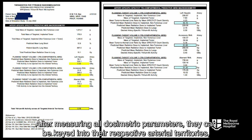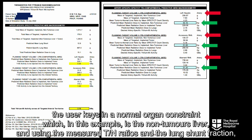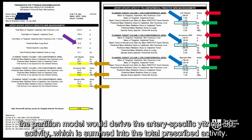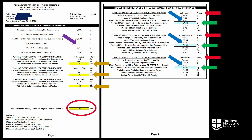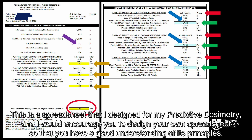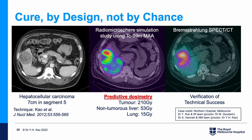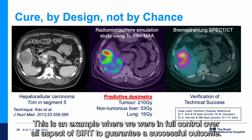After measuring all dosimetry parameters, they can be keyed into their respective arterial territories. The user keys in a normal organ constraint — in this example, the non-tumorous liver — and using the measured TN ratios and the lung shunt fraction, the partition model derives the artery-specific Yttrium-90 activity, which is summed into the total prescribed activity. This is a spreadsheet that I designed for my predictive dosimetry, and I would encourage you to design your own so that you have a good understanding of its principles.